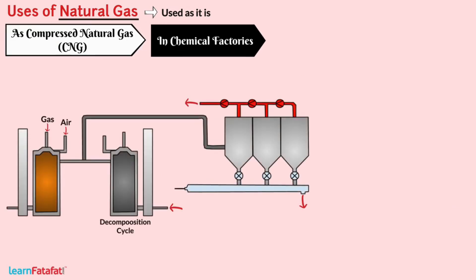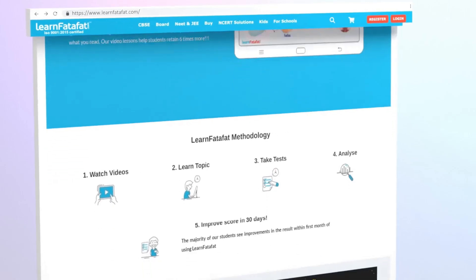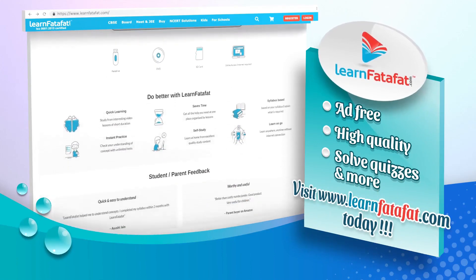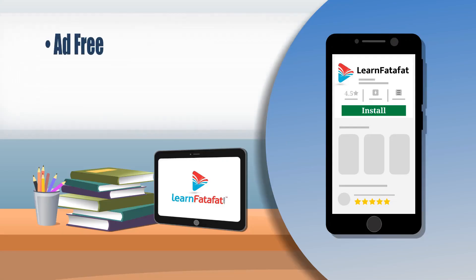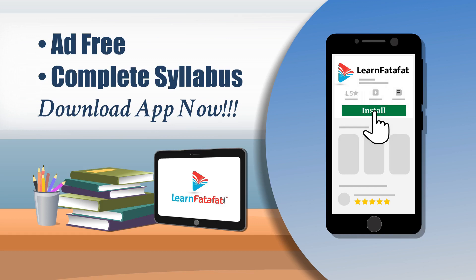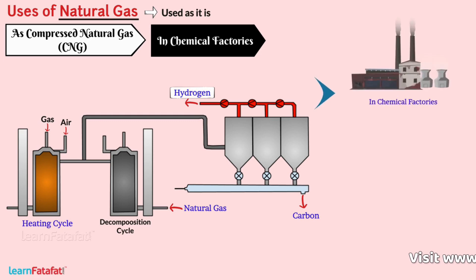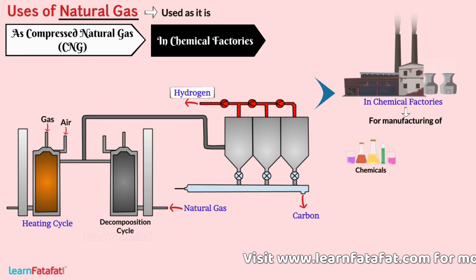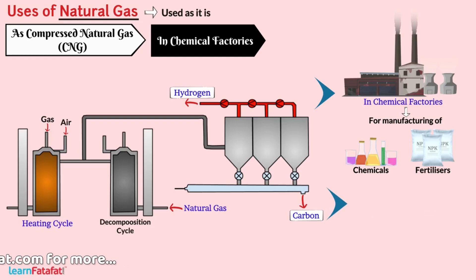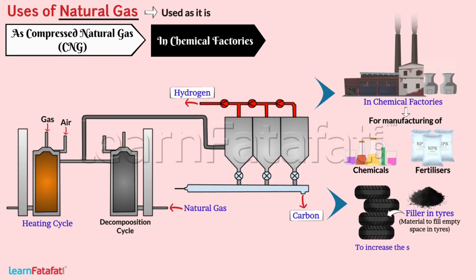In chemical factories, hydrogen and carbon can be obtained by heating natural gas strongly. Hydrogen is used for manufacturing various chemicals and fertilizers, while carbon is used as a filler in tires to increase their strength.